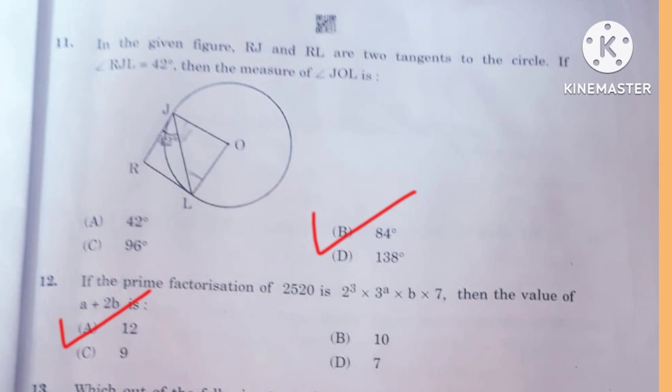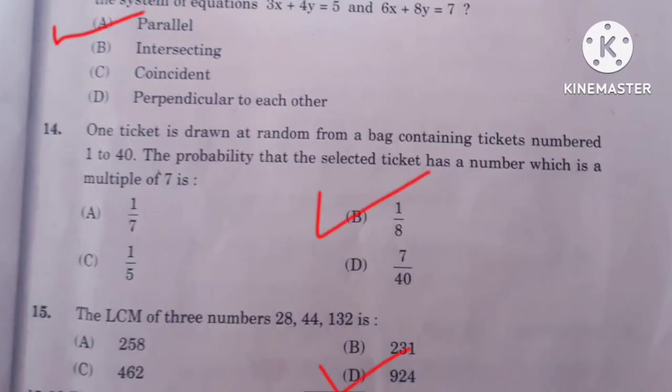Question number 11 is B. 12 is A. Question number 13 is A. 14 is B, and 15 is D.